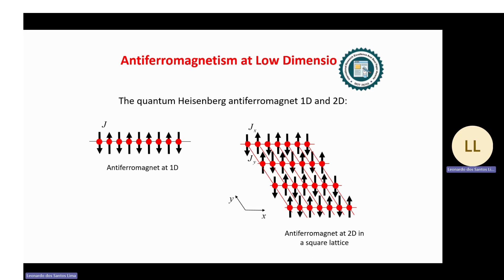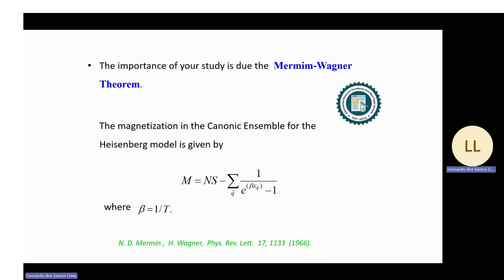The quantum Heisenberg antiferromagnet is considered in all dimensions. The one-dimensional and two-dimensional cases are described in the figure, where the left side shows the one-dimensional antiferromagnet and the right side the two-dimensional antiferromagnet. The importance of our studies is framed through the Mermin-Wagner theorem, where the magnetization diverges in two dimensions.